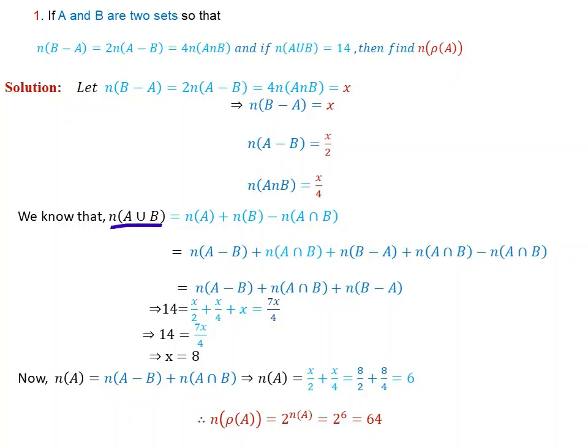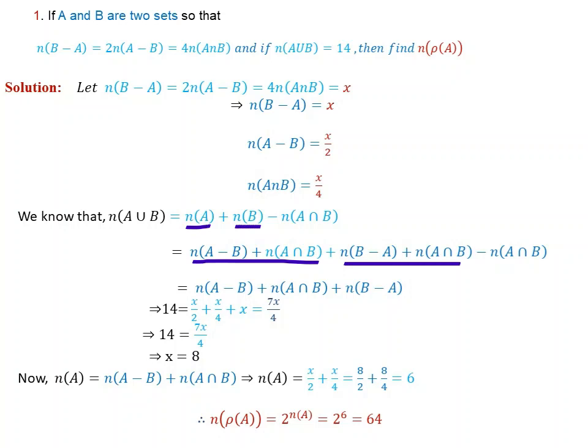We know from the formula that the number of A union B equals number of A plus number of B minus number of A intersection B. From the difference of two sets A and B, we know that number of A without B equals number of A minus number of A intersection B, and number of B without A equals number of B minus number of A intersection B.